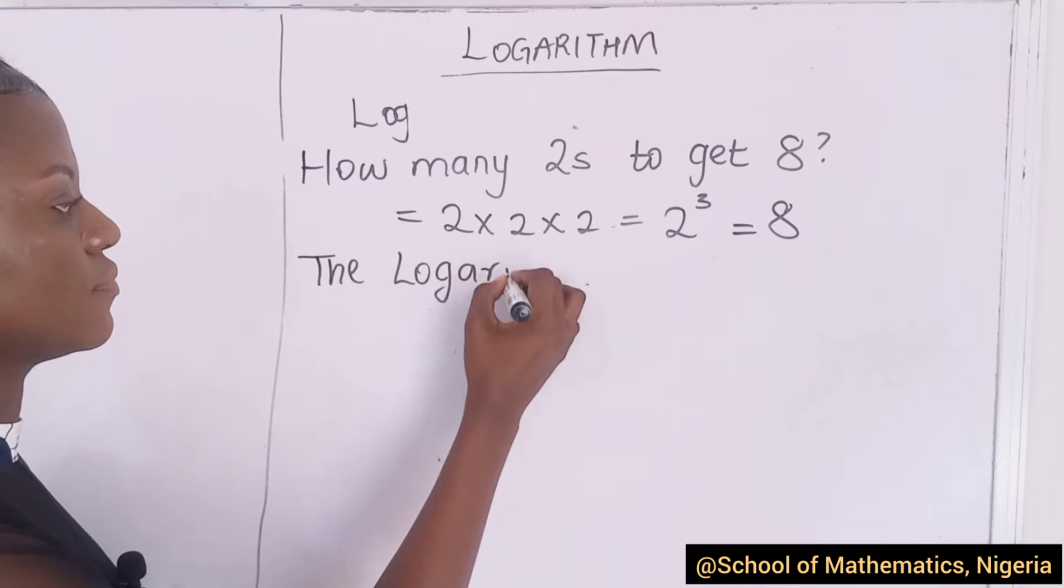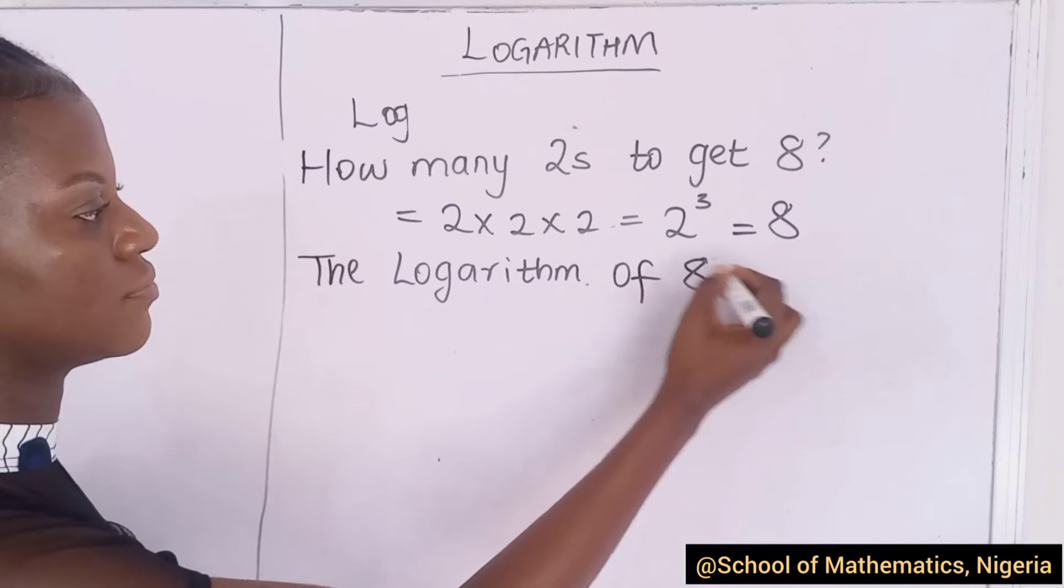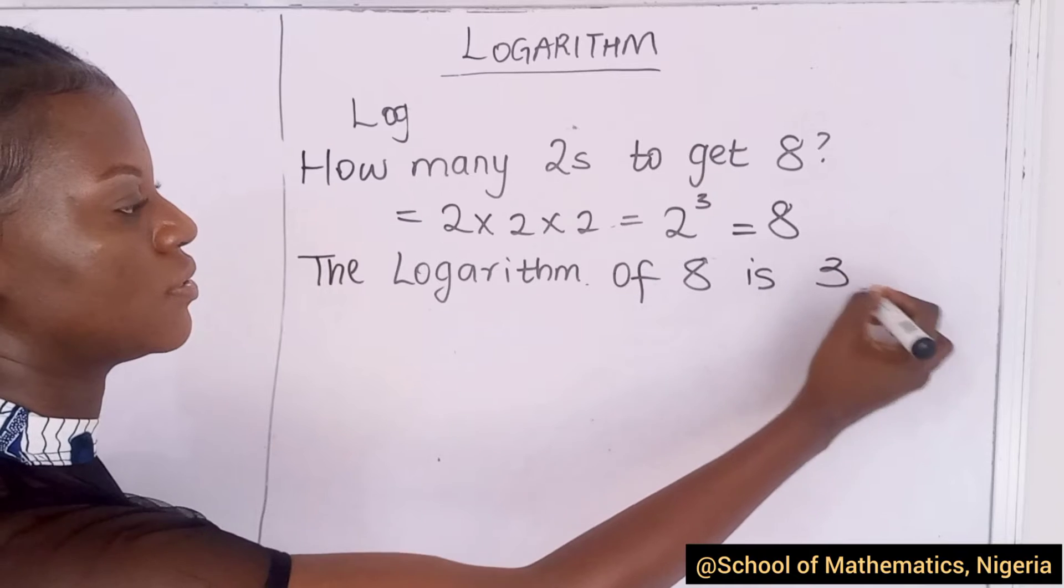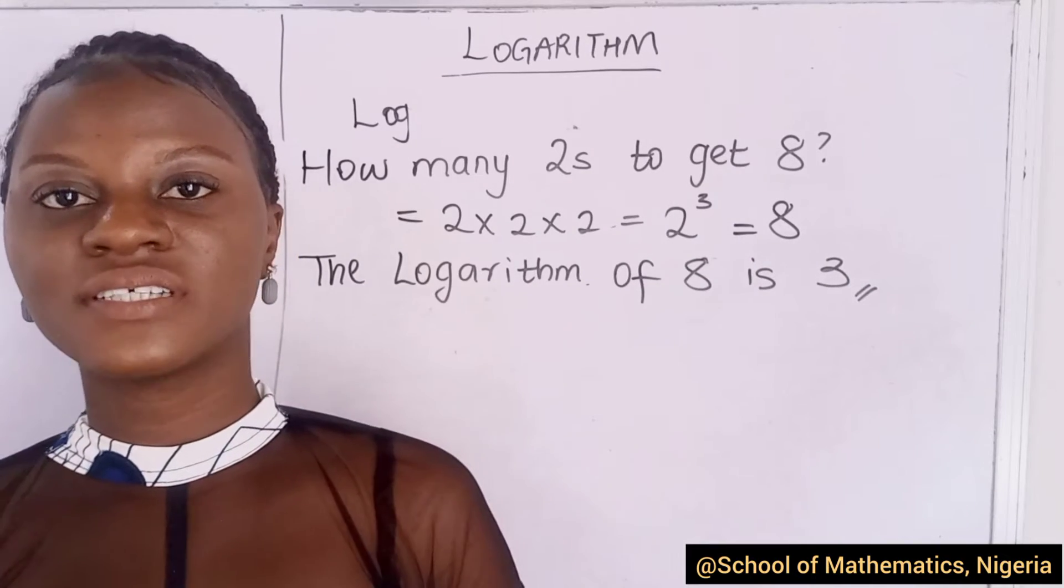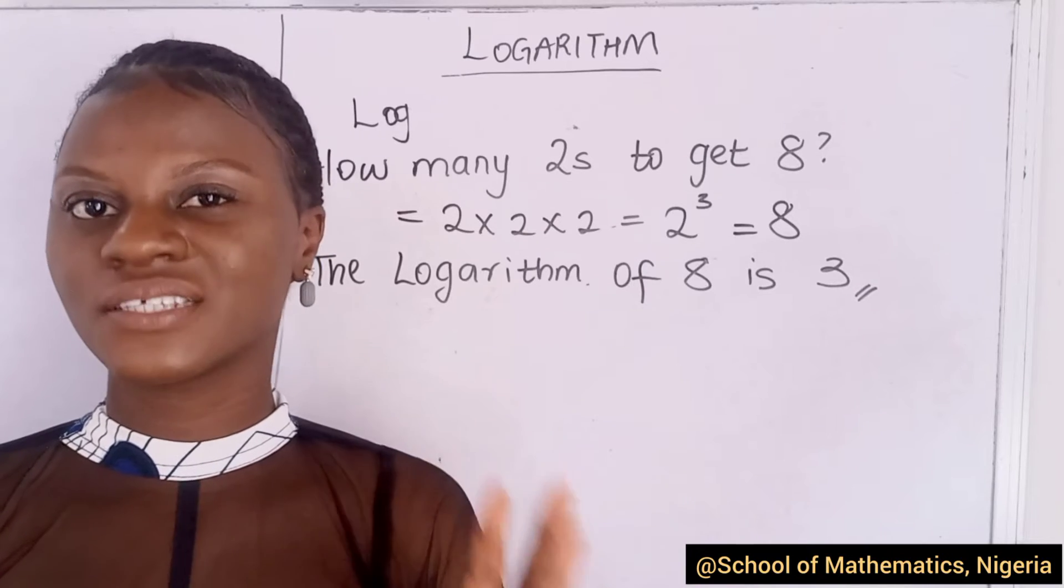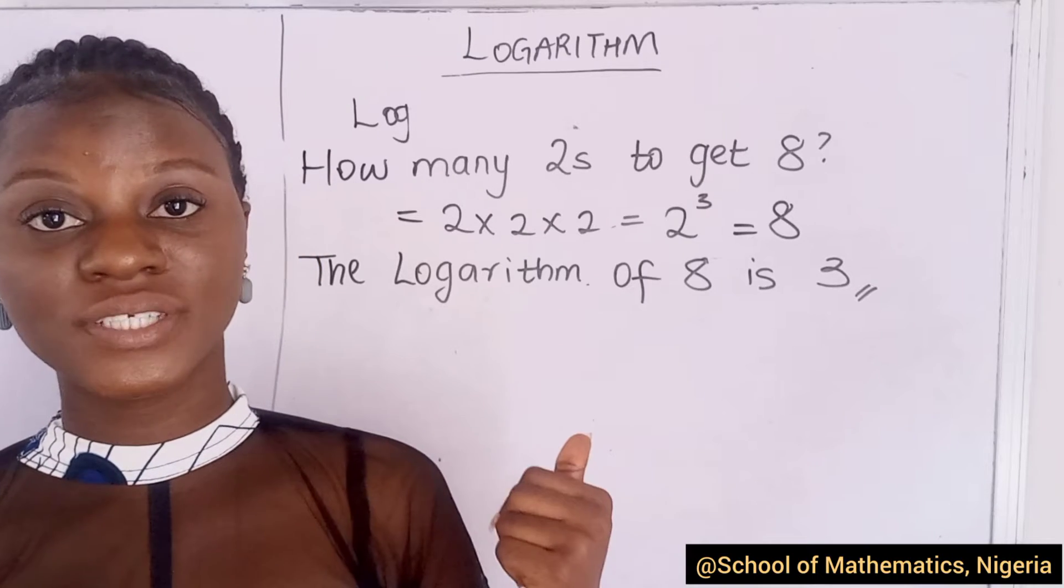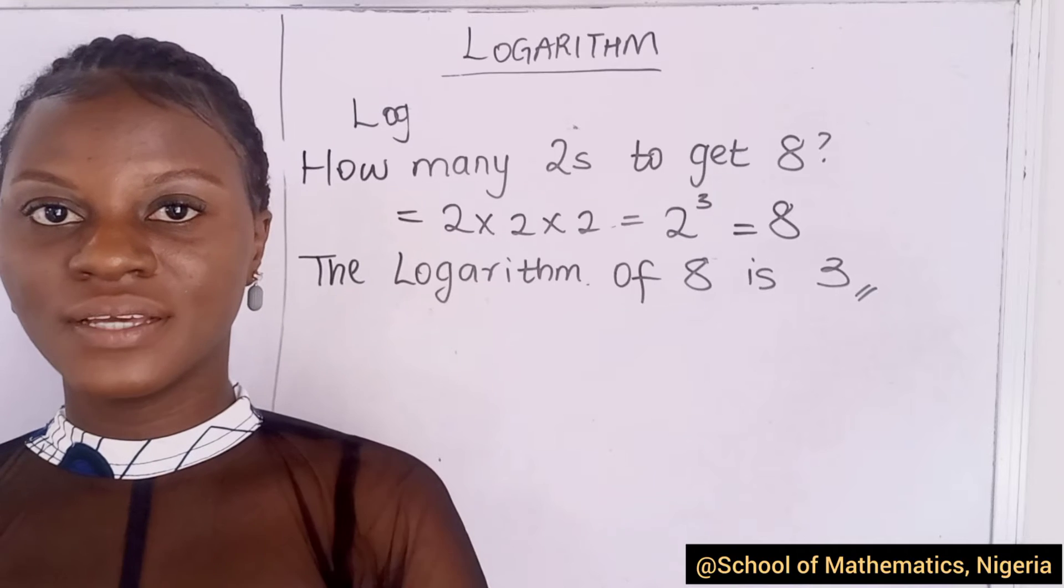The logarithm of eight is three. How many times did we have to multiply two? We had to multiply three times to get eight. So, the logarithm of eight to base two is three.